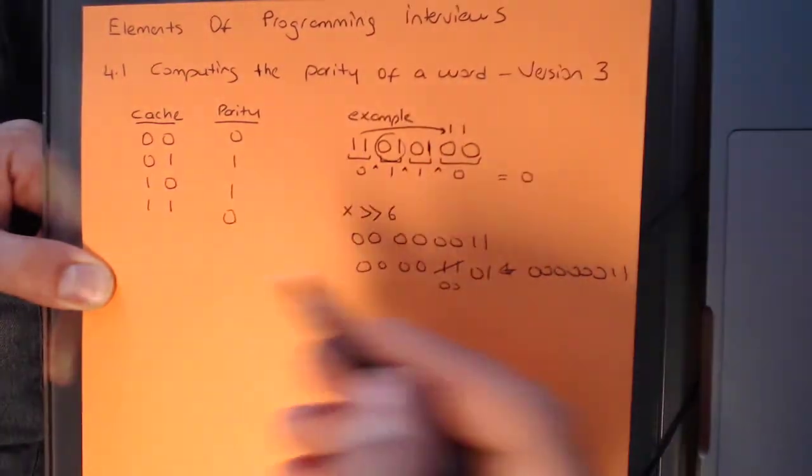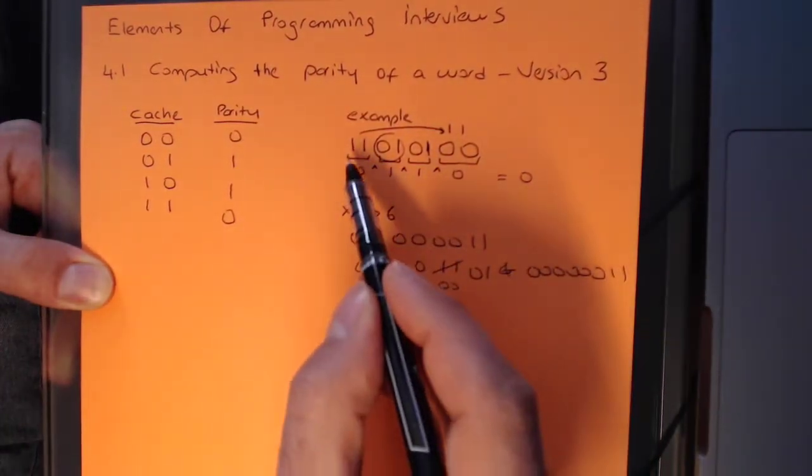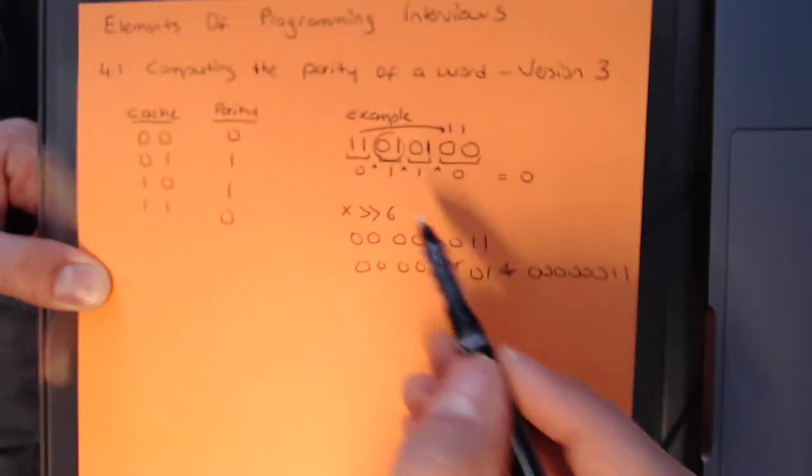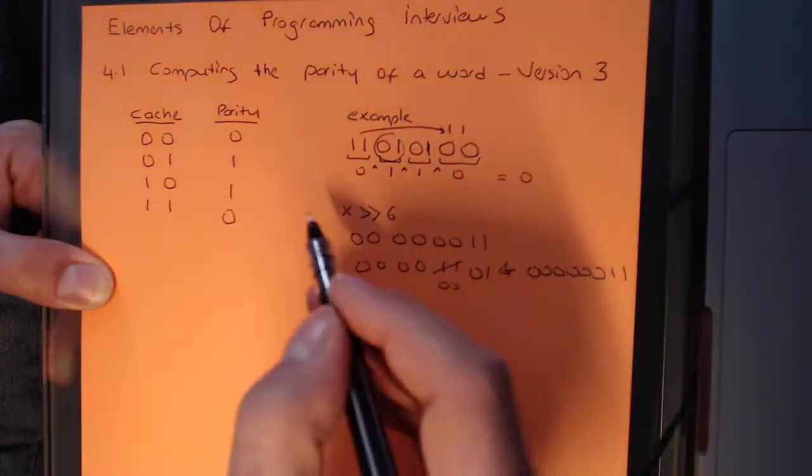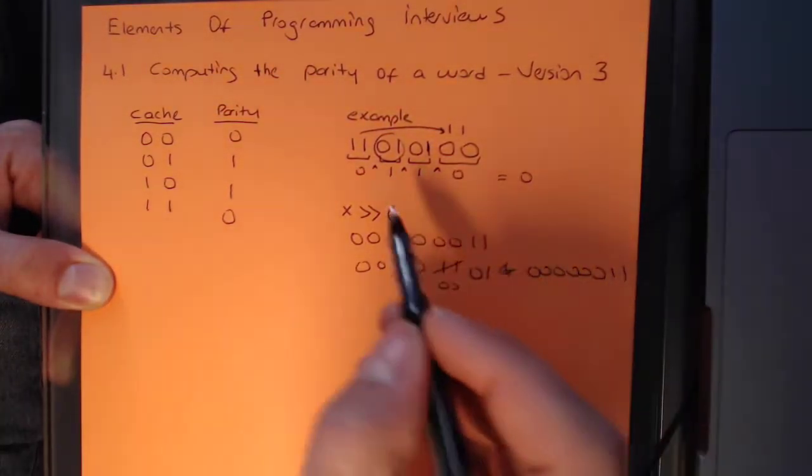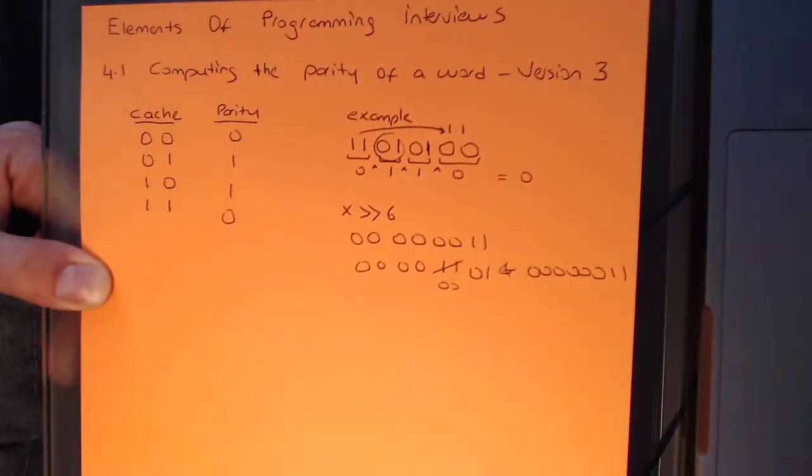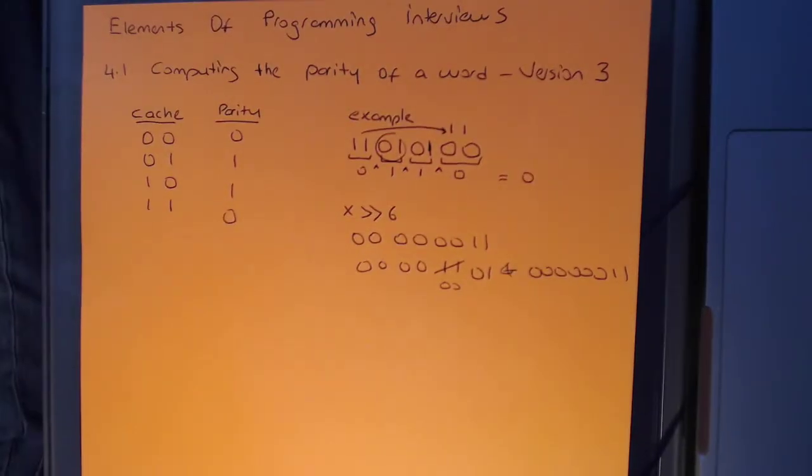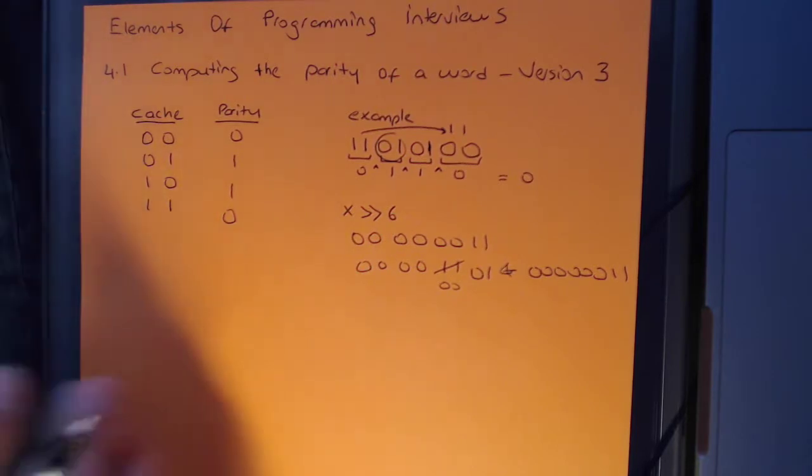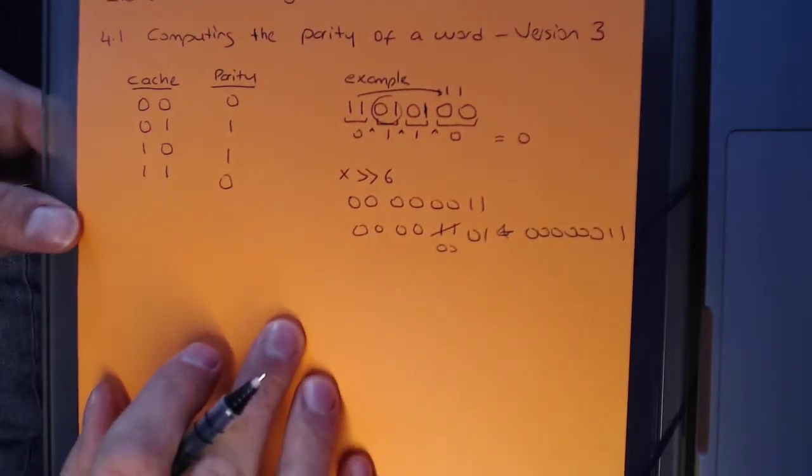Basically, the approach that we are taking is that we're using a cache to look up, but we also need to be shifting some bits to be able to get the number that we need to look up. So let's take a look at what the code looks like.